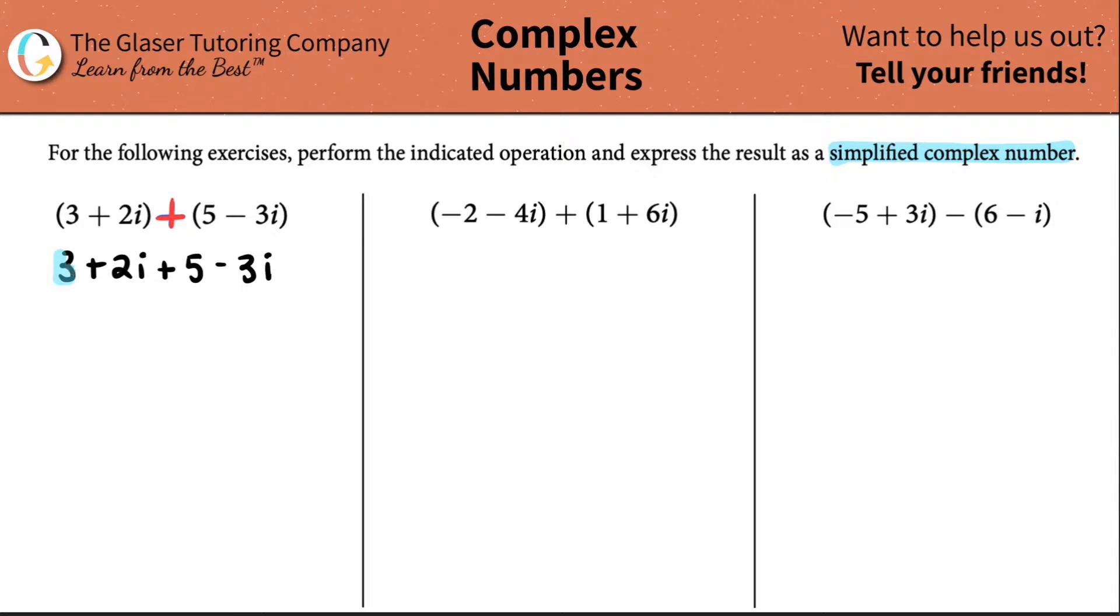So I see a 3 and I see a 5. The same thing is I see a 2 that's being multiplied by an i, but then I have this 3i, right? Now pay close attention: the 3i is actually a negative. Always look at those signs to see if it's a negative or a positive.